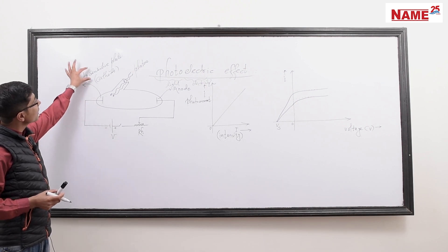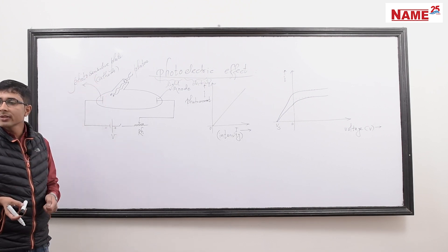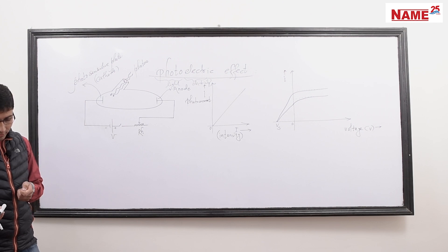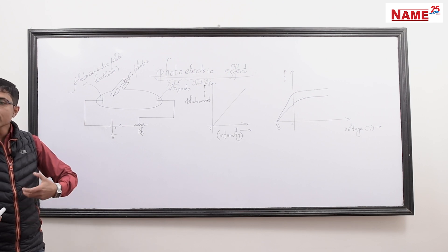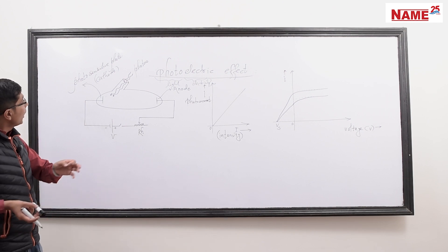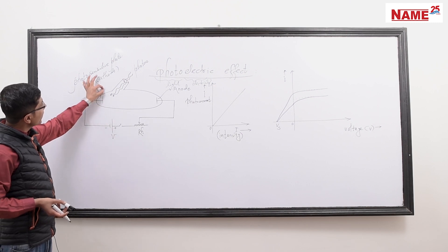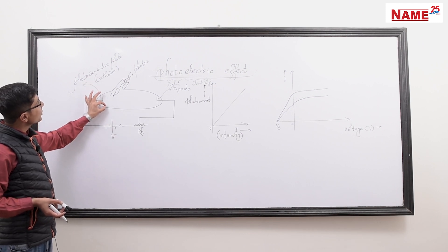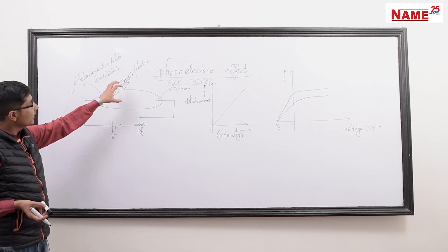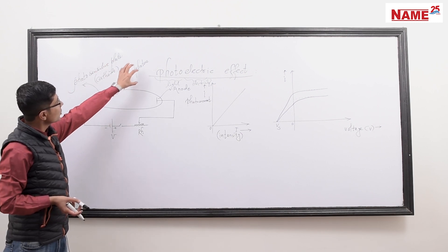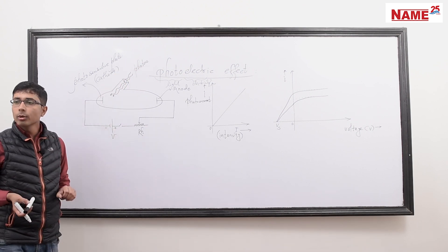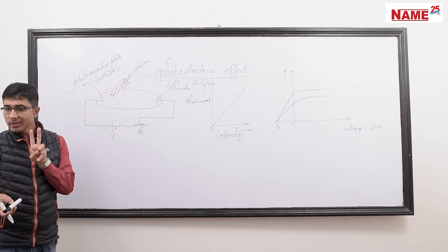What does this mean? A photosensitive plate, which means an alkaline metal surface, releases electrons. On the alkaline metal surface or photosensitive plate, there is a photon incident of energy. The photon's energy is used in two parts.